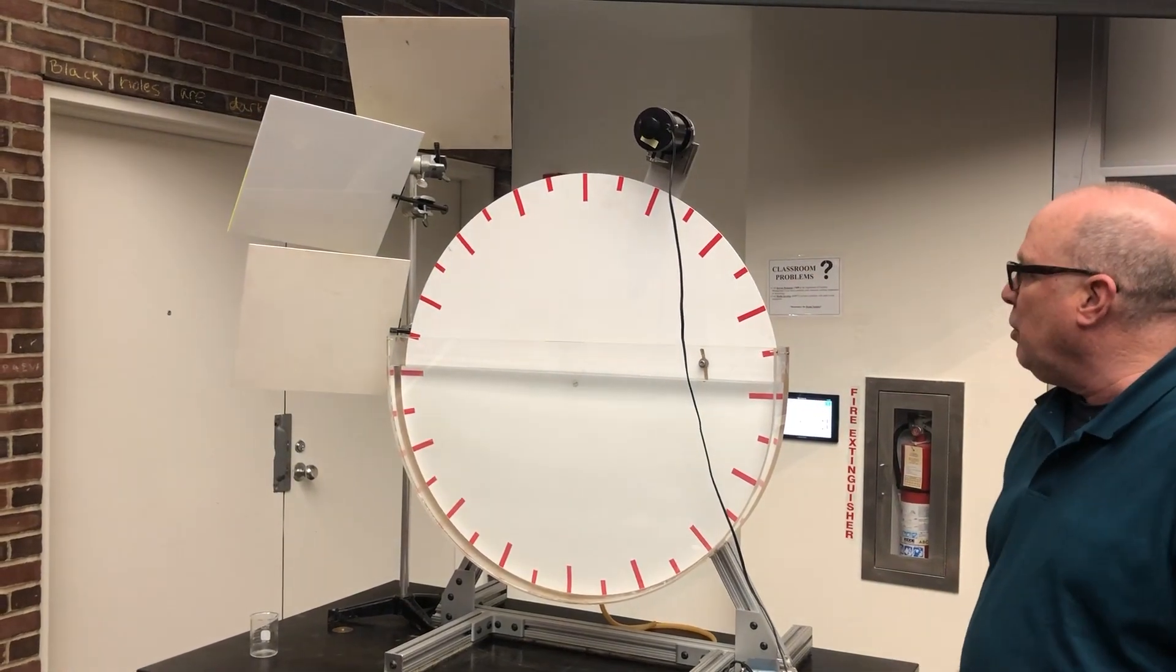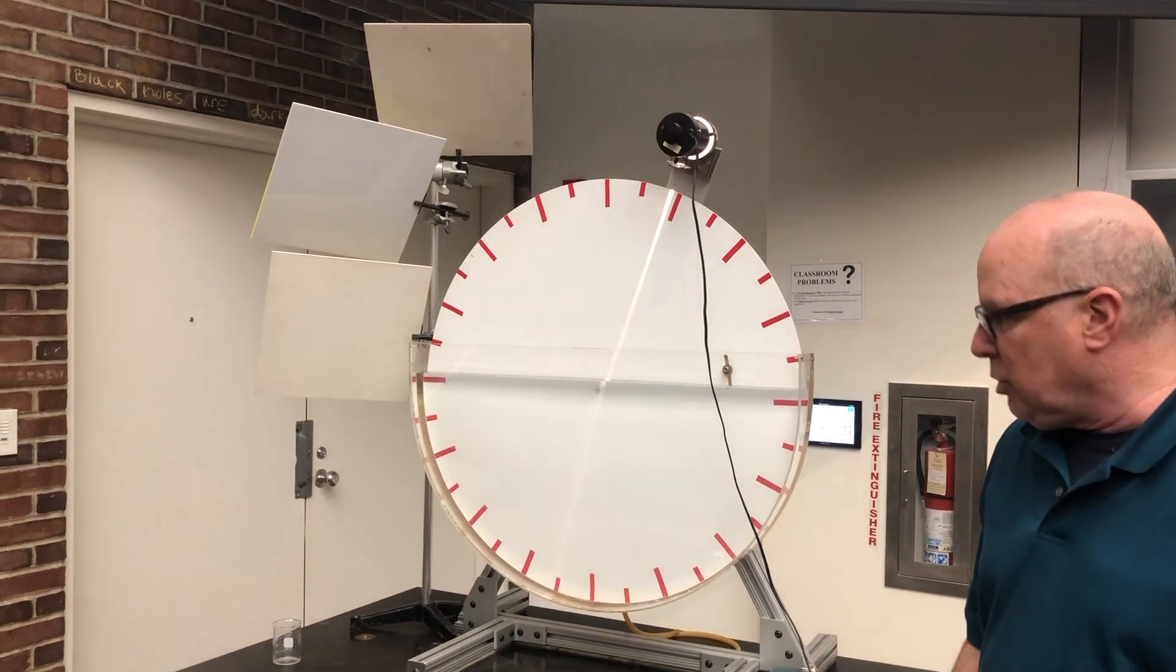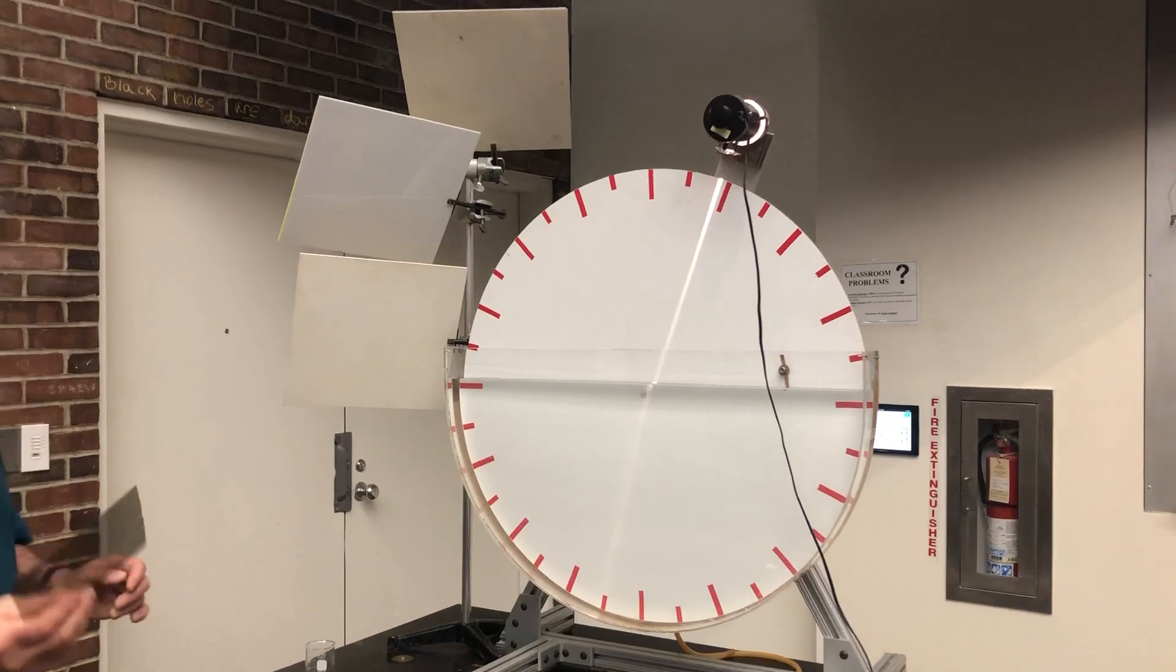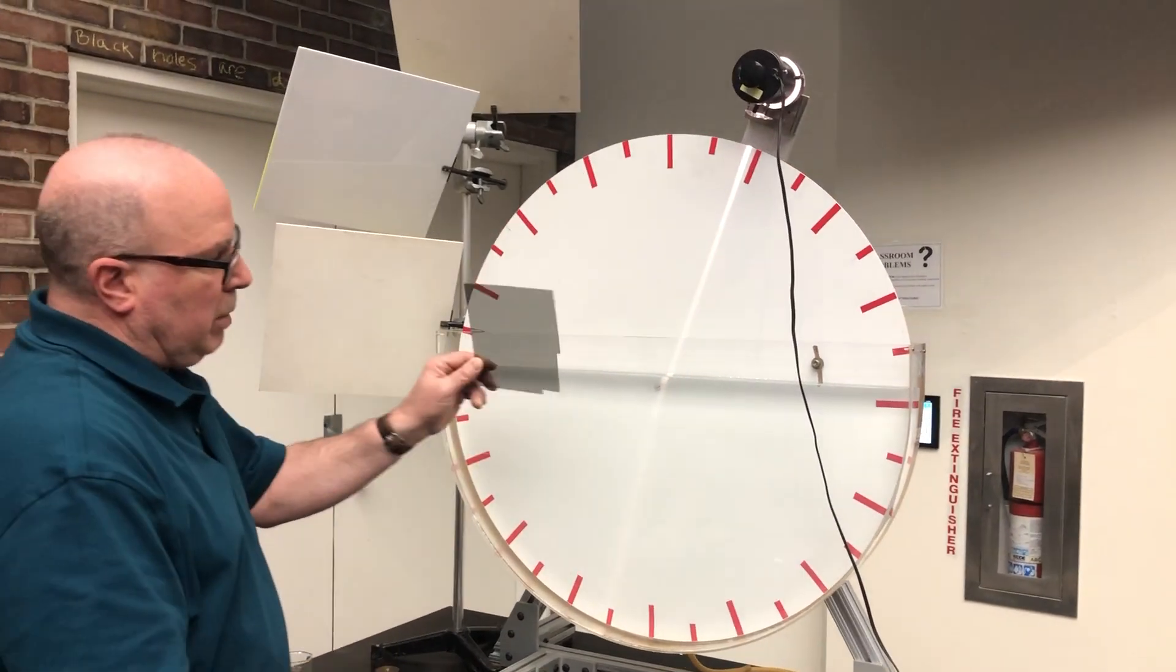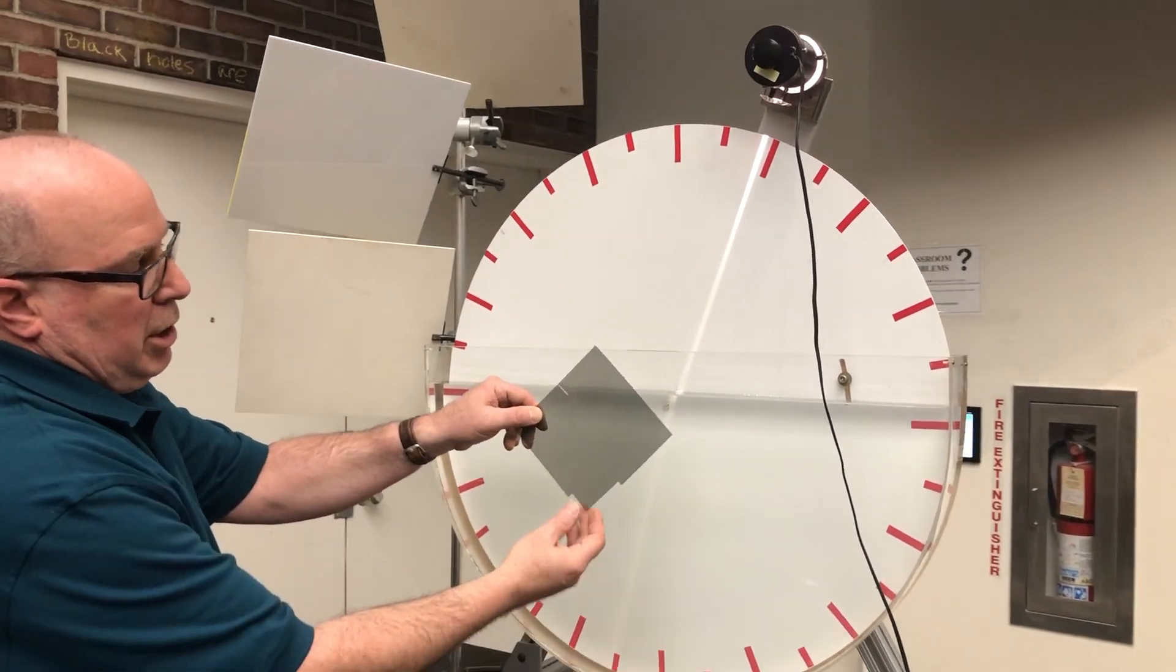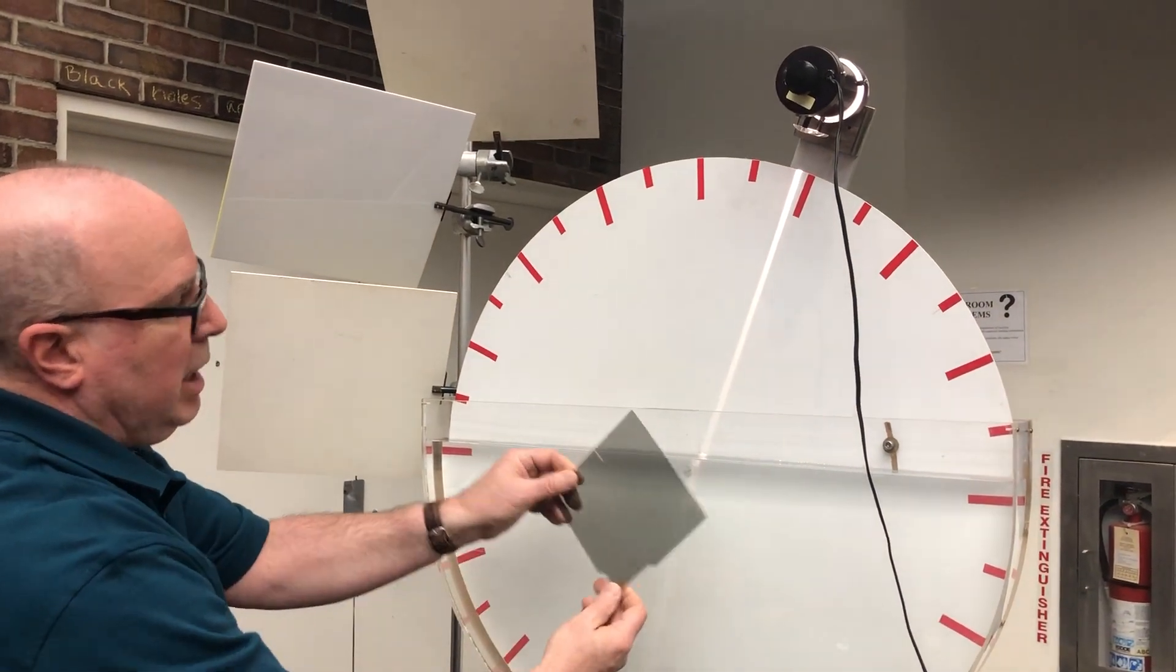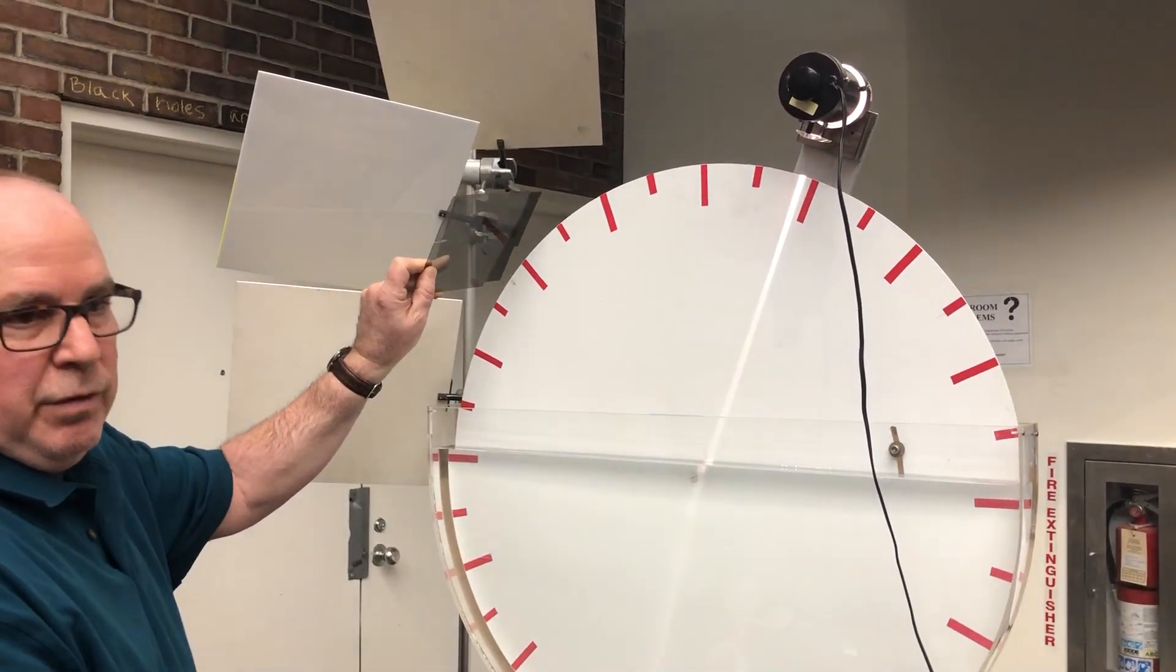I'm going to now turn on the light source and shut off the room lights. One more thing I want to say before I shut off the room lights. For this demonstration I'm going to take a polarizing film and rotate it in the path of the reflected beam.